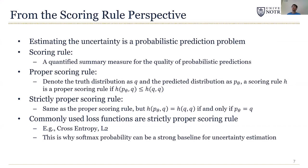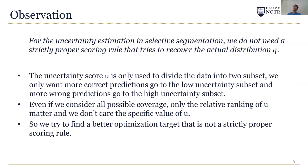Strictly proper scoring rules are often used as cost functions in optimization problems. In the context of neural networks, it is a loss function. So it is known that commonly used loss functions such as L2 loss or cross-entropy are strictly proper scoring rules for uncertainty estimation. This is why the softmax probability uncertainty can be a strong baseline for uncertainty estimation.